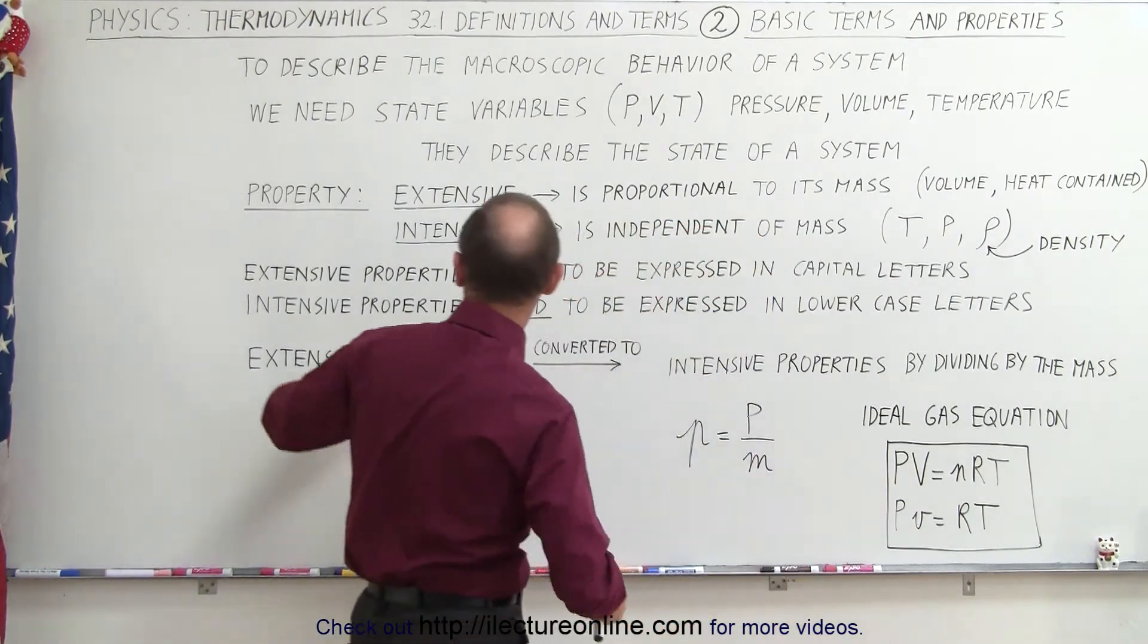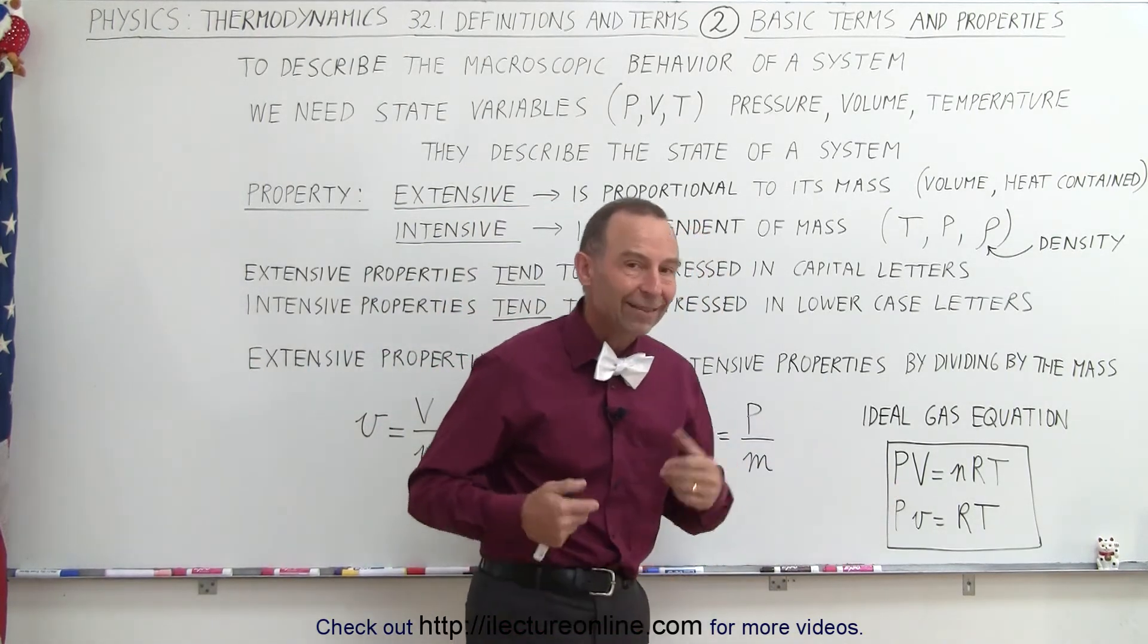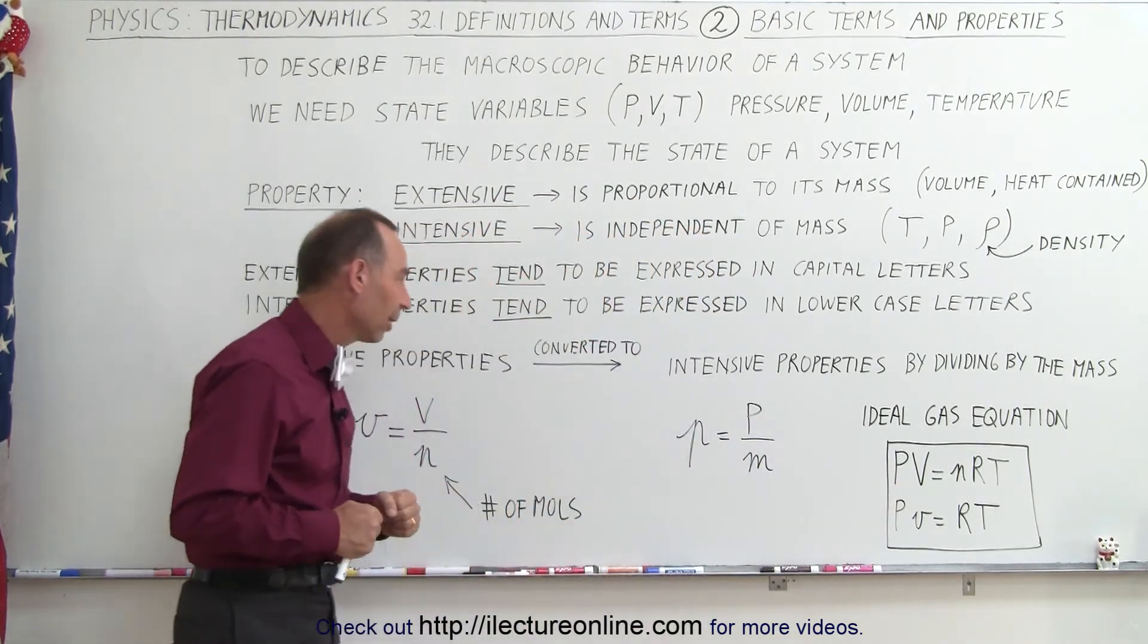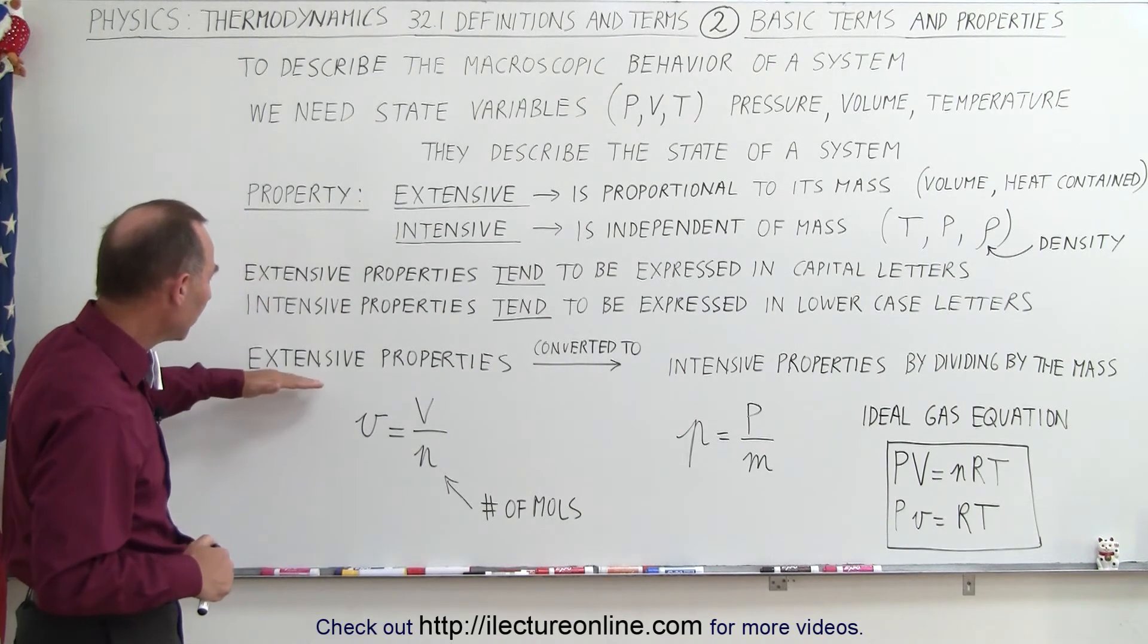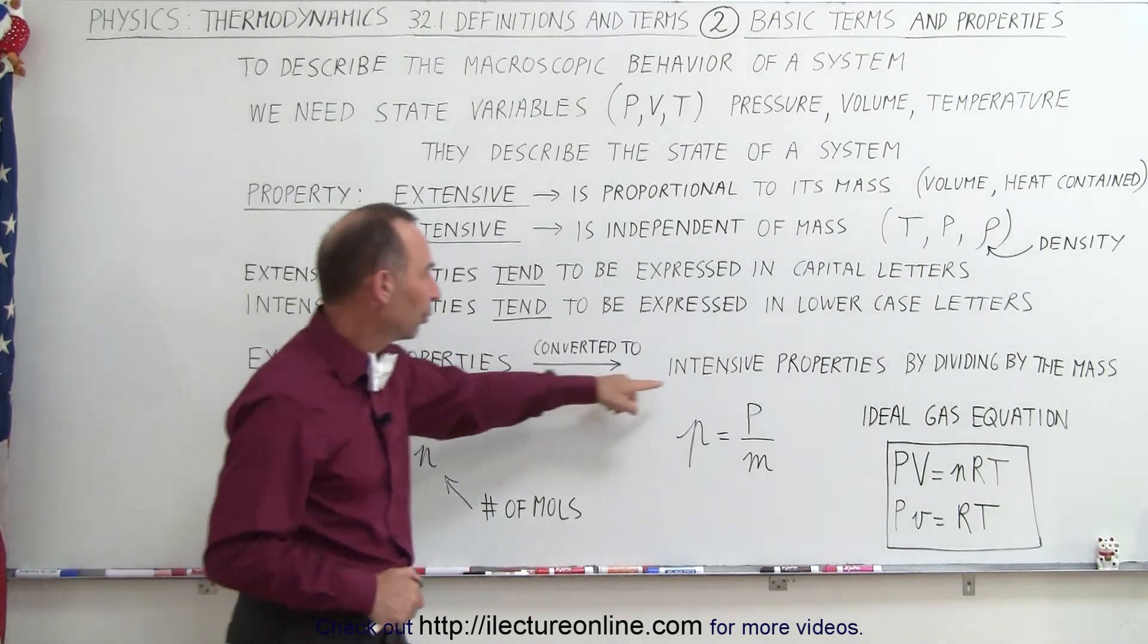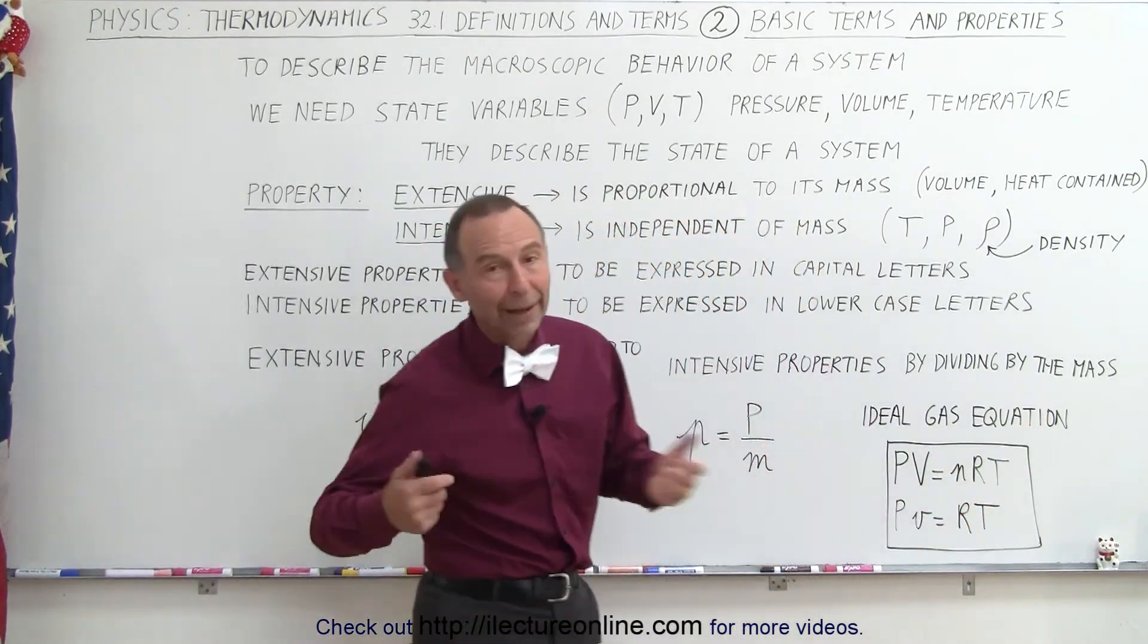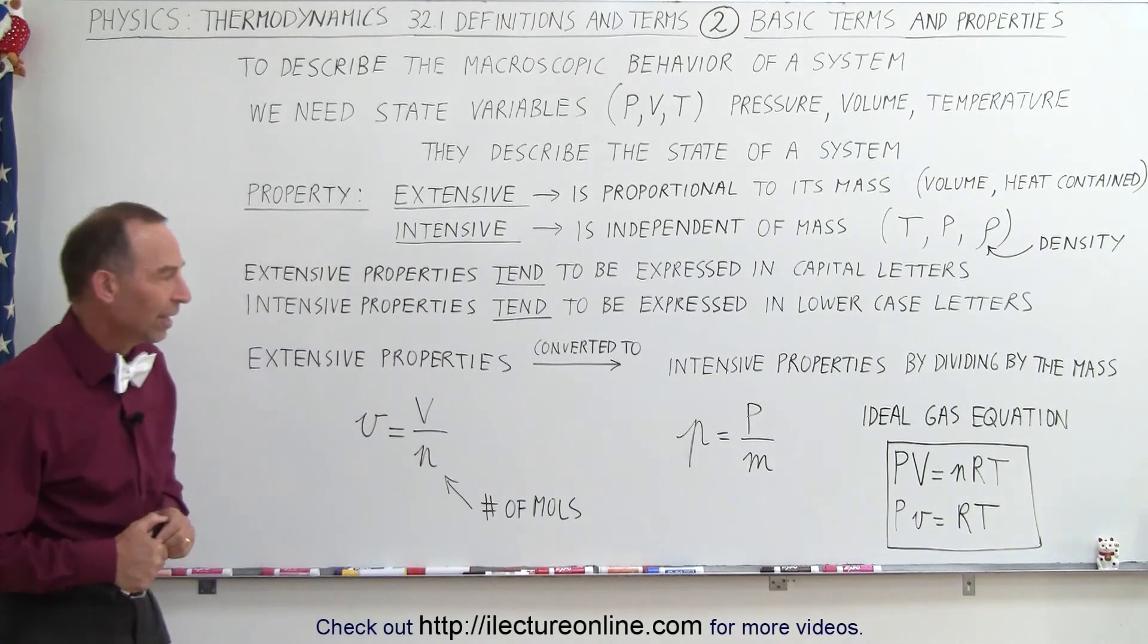This V was the extensive property, so that's where the difference comes in. Notice that if we want to turn something that has an extensive property and convert it to an intensive property, we simply divide it by the mass or by the number of moles. Either way, you get the same result.